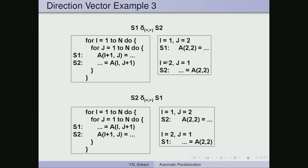The second example: S2 delta less-than-greater-than S1. We have a[i][j+1][j+1] on the left and a[i+1][j] on the right side of S2. Expanding i=1, j=2: S2 gives a[2][2]=..., and i=2, j=1: S1 becomes equal to a[2][2]. There is a flow dependence from S2 to S1. The i value increases, so the direction vector component for i is less than; the j value decreases, so the second component is greater than. All types of dependences are possible.